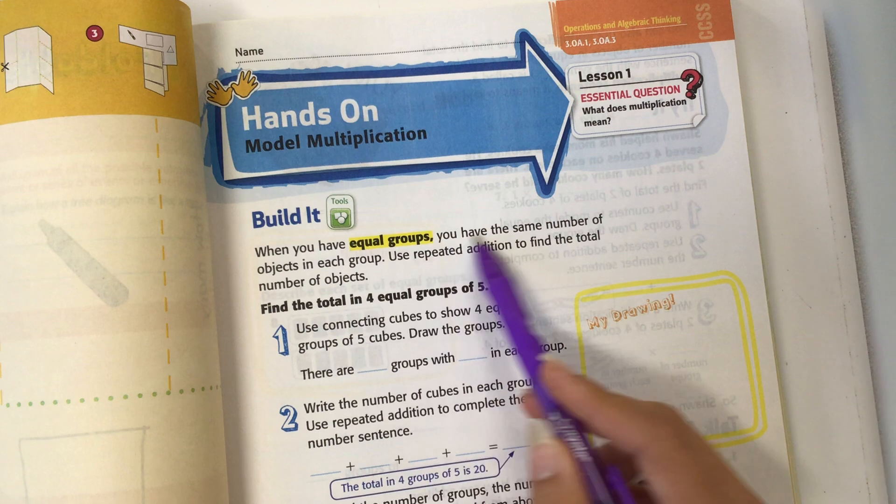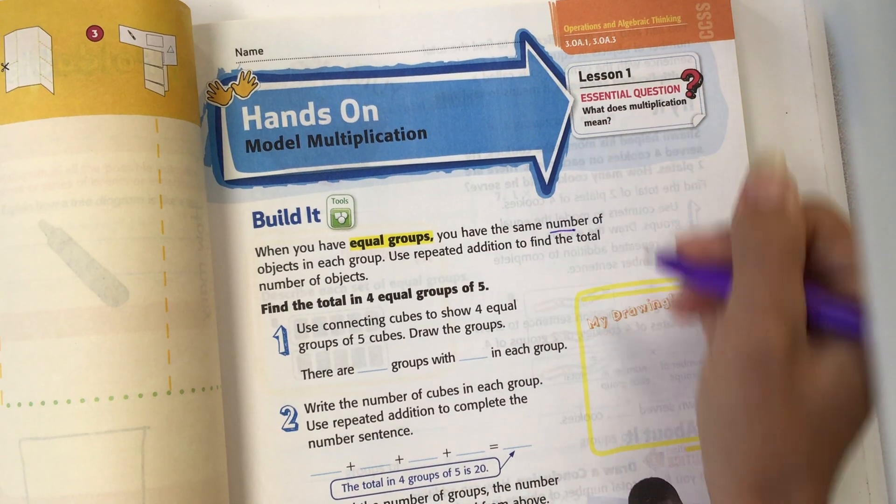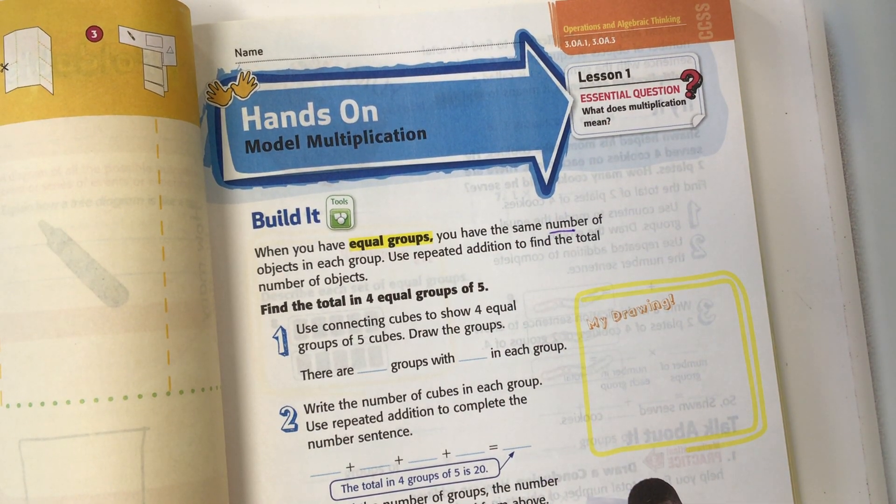When you have equal groups, you have the same number of objects in each group. Use repeated addition to find the total number of objects. Find the total in four equal groups of five. Use connecting cubes to show four equal groups of five cubes and draw the groups.